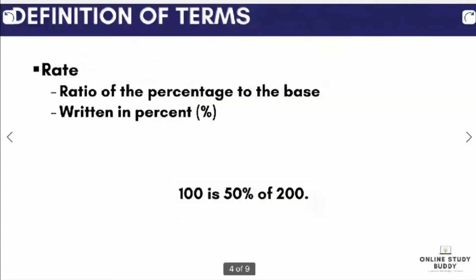Next, we have the rate. The rate is the ratio of the percentage and the base. It is written in percent. So for our example, we see that the rate is 50% — it's easy to find because it is written in percent.